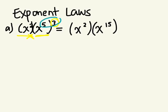We've simplified this into two powers. We want to write it as a single power. What happens when we multiply powers with the same base? Write the base and add the exponents, so it's x to the power of 17.